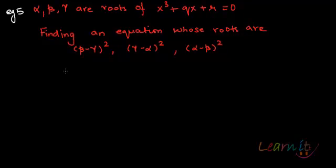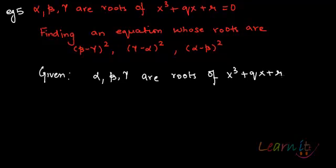We are given that α, β, γ are roots of x³ plus qx plus r equals to 0. Hence I know that the sum of the roots equals to, I do not have any coefficient for x². So this means that the sum equals to 0 and I know that αβγ equals to minus r.